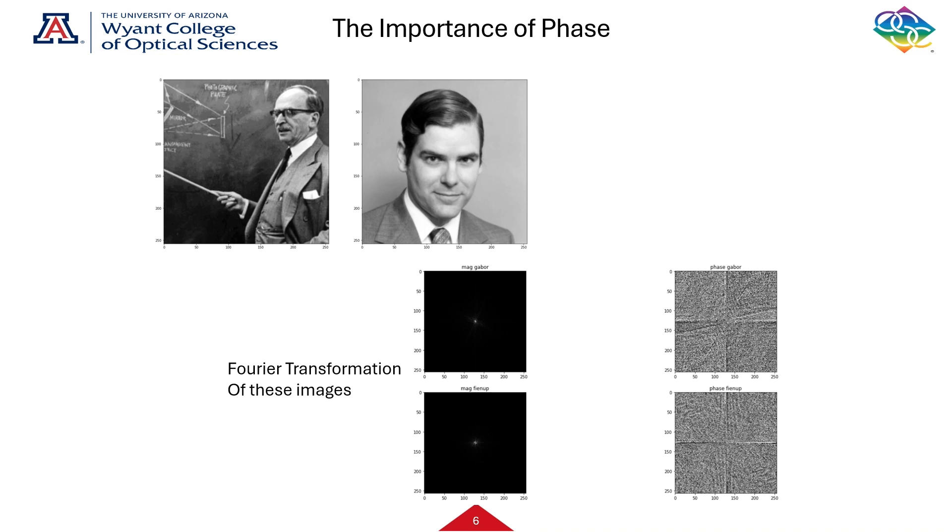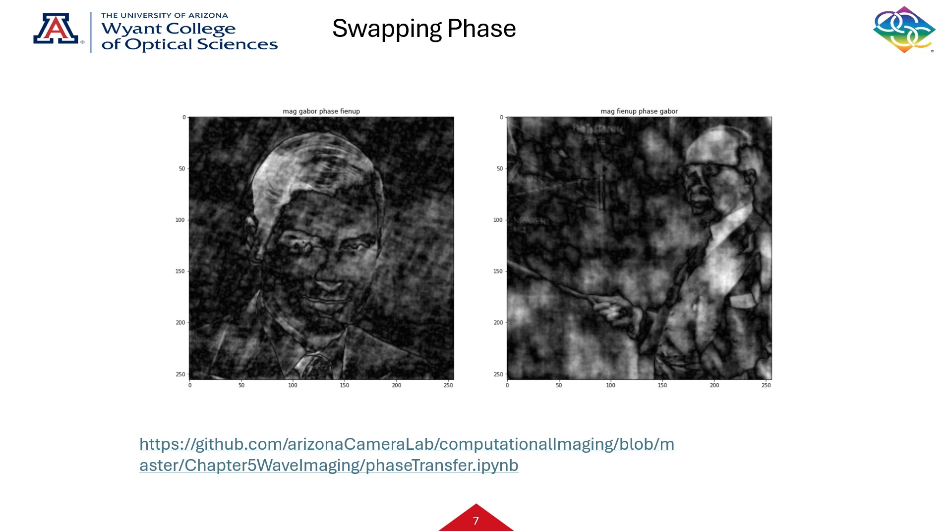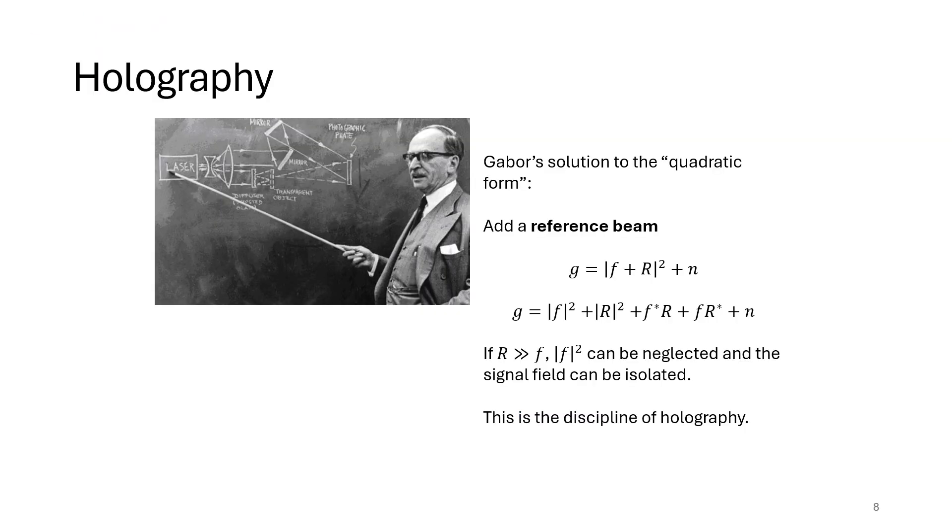And now if we take the inverse Fourier transform, of course we would recover the images. But an interesting thing would be, what if we swap the phase? So we multiply the magnitude of the Fourier transform of the Gabor picture with the phase of the Fienup picture and vice versa. And what you see is we could recover the opposite image. So in typical imaging systems, the phase is a strong carrier of information because it's not dominated by low frequencies like the magnitude tends to be.